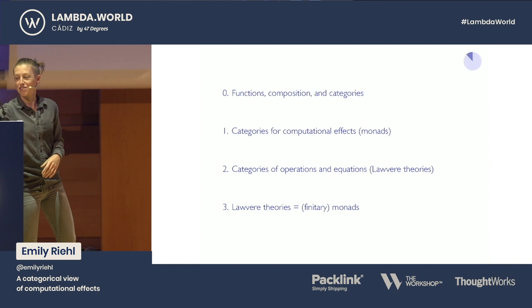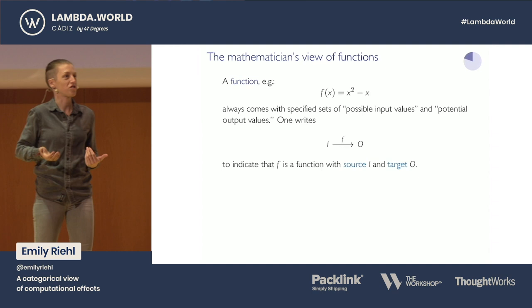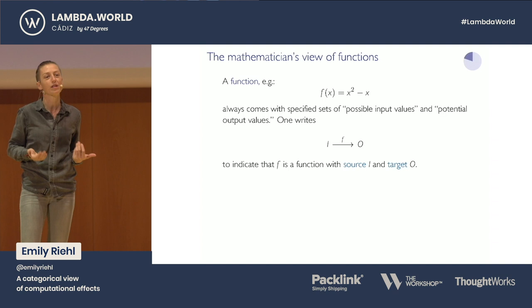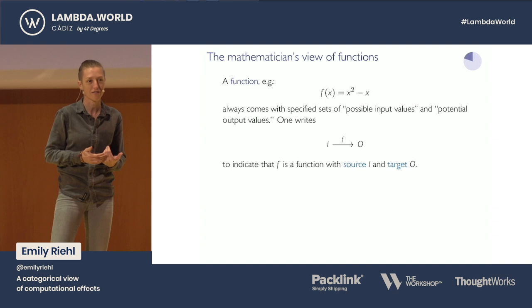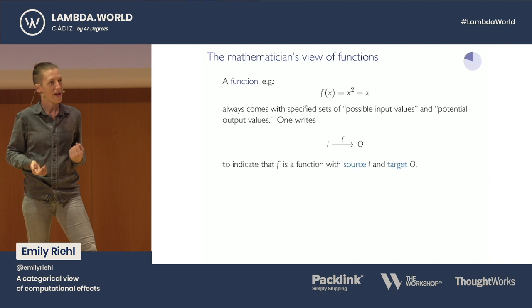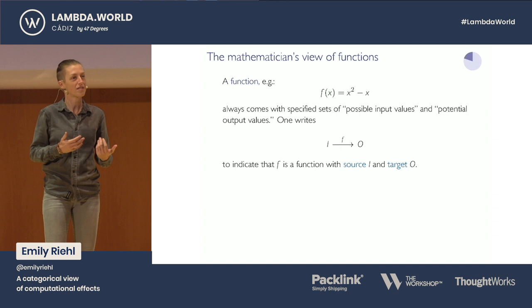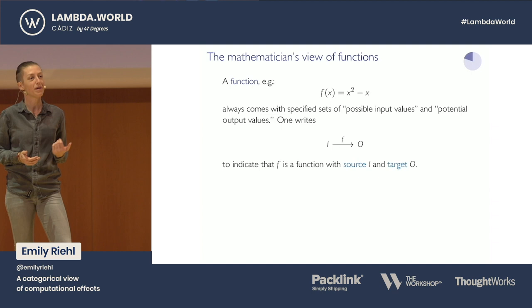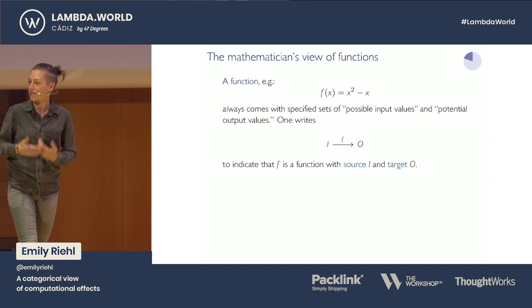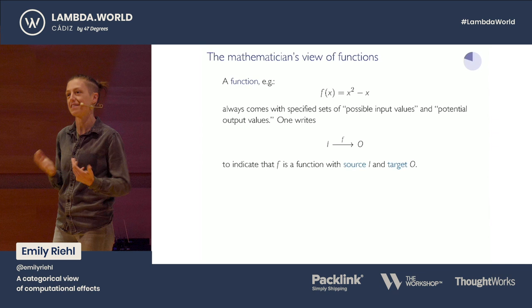A function is often presented as just some sort of formula — f(x) = x² − x. But that's not really well typed. If we're going to define a function more formally, it should come with a specified set of inputs and a specified set of potential outputs. Part of the reason for this is it allows us to interpret what's meant by the symbols in the formula. For example, x² − x could refer to operations on real numbers or on square matrices.